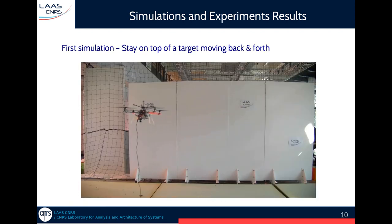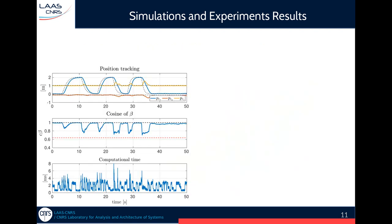So our first scenario is that we wanted the quadrotor to stay on top of a target that was moving back and forth at increasing speed. So this is the plot that we achieved. You see that when the target starts to move, the cosine of beta decreases because it goes out of the center of the field of view, but the quadrotor is eventually able to catch up with the target without losing it.